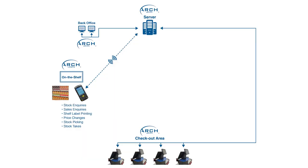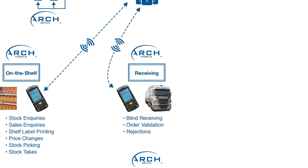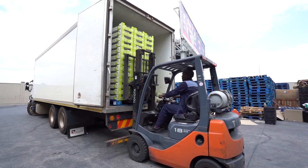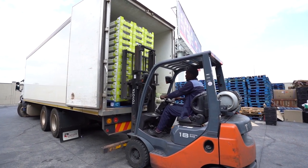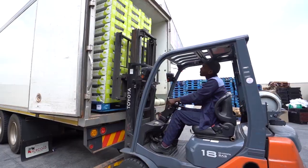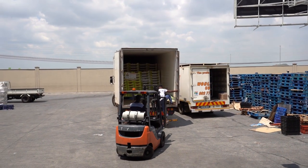The second application of ARCH Mobile is receiving. Deliveries from your supplier is a key process in your business and often an area where stock shrinkage and losses can occur. ARCH Mobile receiving was developed for this very reason and provides the controls required to eliminate stock losses and human error, with a direct result in increasing business profitability.